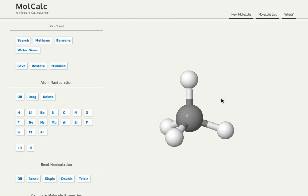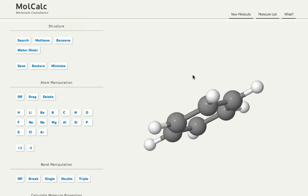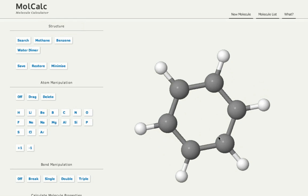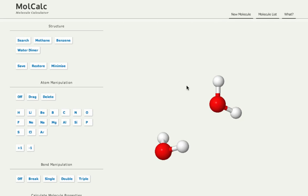and so the default is to start building from a methane molecule, but if you want, you can also start building from benzene, or if you want to build something with a hydrogen bond, you can start from the water dimer.